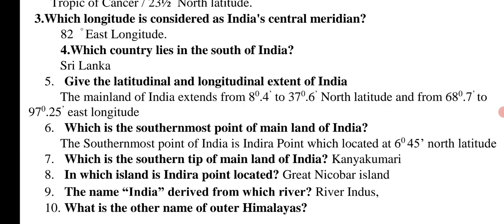Which is the southernmost point of the mainland of India? Right answer: The southernmost point of India is Indira Point.